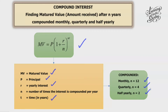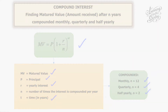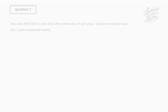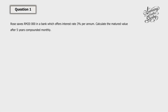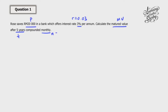Let's look at question number 1. Row saves 20,000 ringgit in a bank which offers interest rate 3% per annum. Calculate the matured value after 5 years, compounded monthly. So here our principal is 20,000, interest rate R is 0.03, T is 5, and compounded monthly means N equals 12.